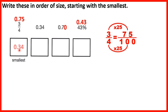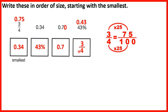So we can see that 0.34 will be the smallest, then 43% which is 0.43, then 0.7, and our largest number is 3 quarters, because that's equivalent to 0.75.